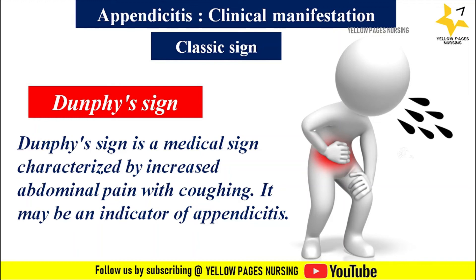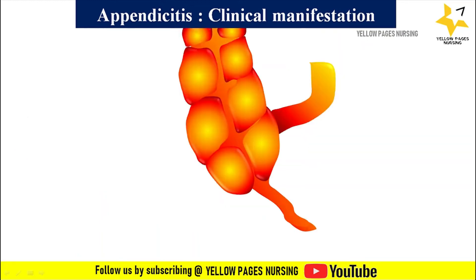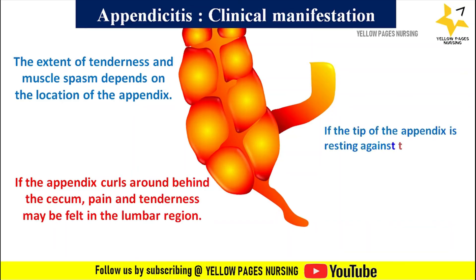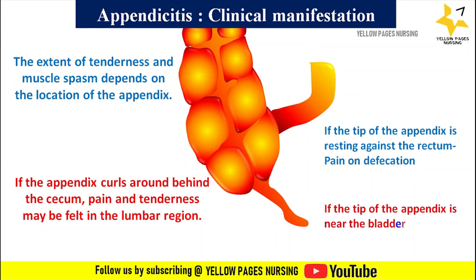The extent of tenderness and muscle spasm depends on the location of the appendix. If the inflamed appendix curls around behind the cecum, pain and tenderness may be felt in the lumbar region. If the tip of the inflamed appendix is resting against the rectum, pain may be felt on defecation. If the tip is near the bladder, pain is felt on urination.